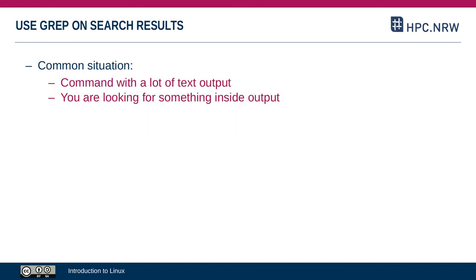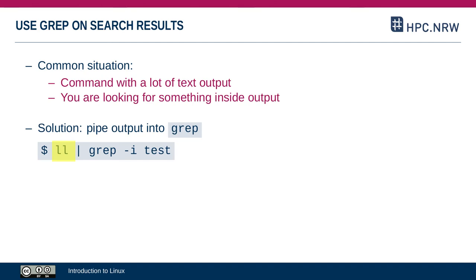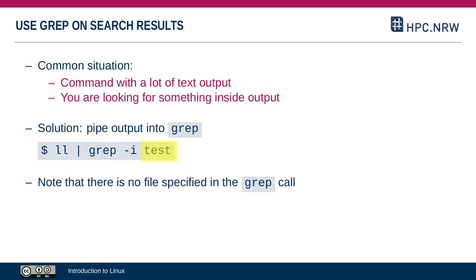A common situation is having a lot of text output from a command — maybe you've redirected it into a text file with the greater-than sign — and inside that large output you're looking for something. In that case, you can execute your command and then pipe the output into grep to search through it. You specify a text string but no file name, because the input for grep won't come from a file — it will come from the command via the pipe. These pipes and redirections can be really useful and used for many things.